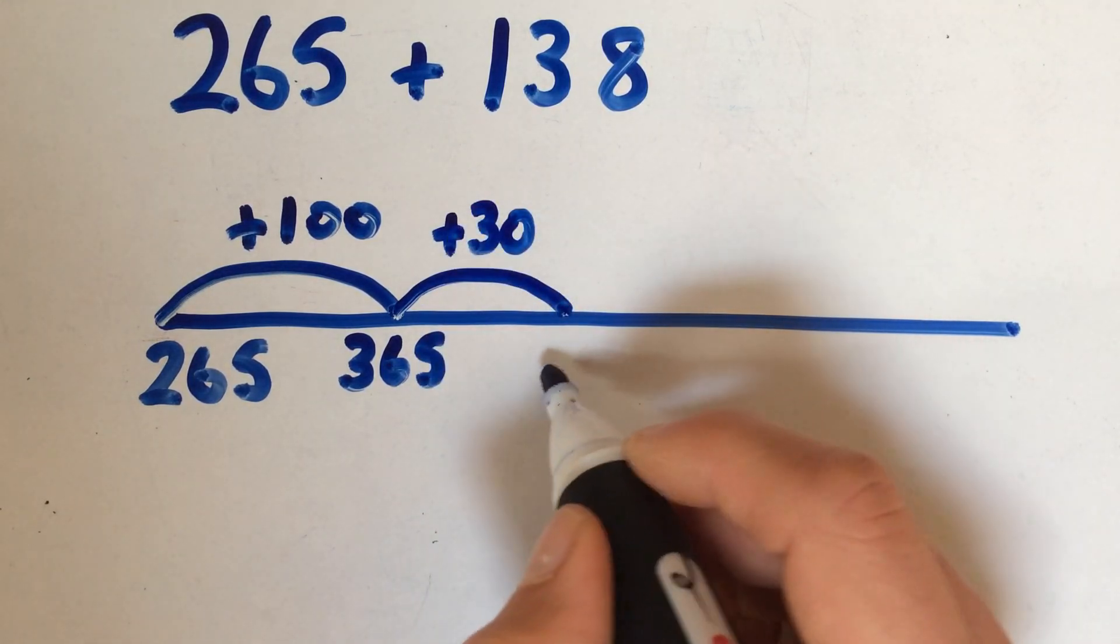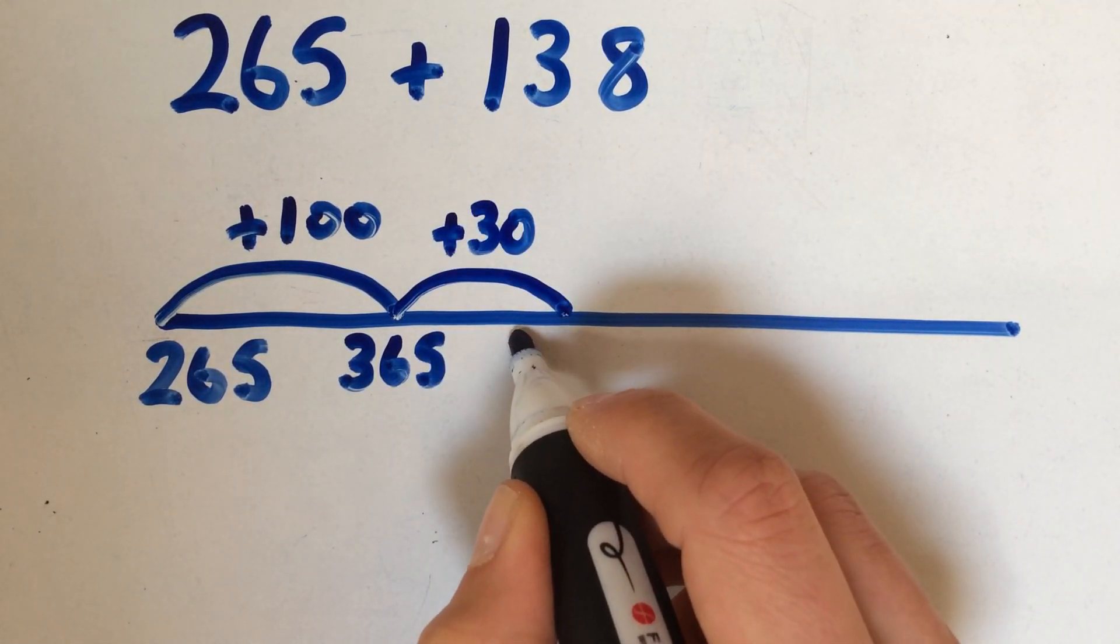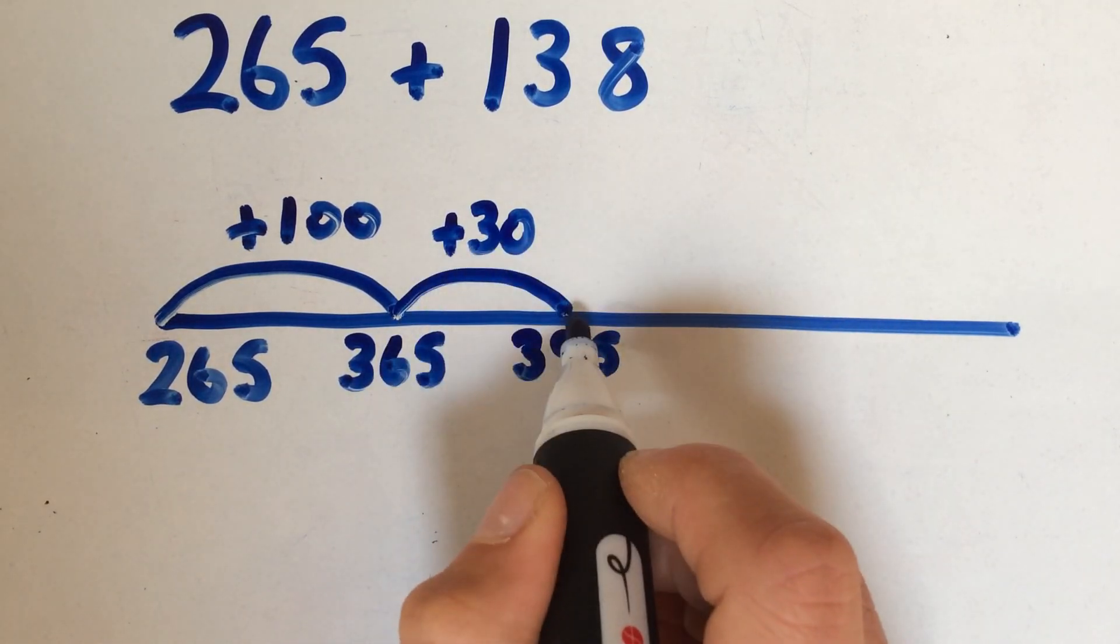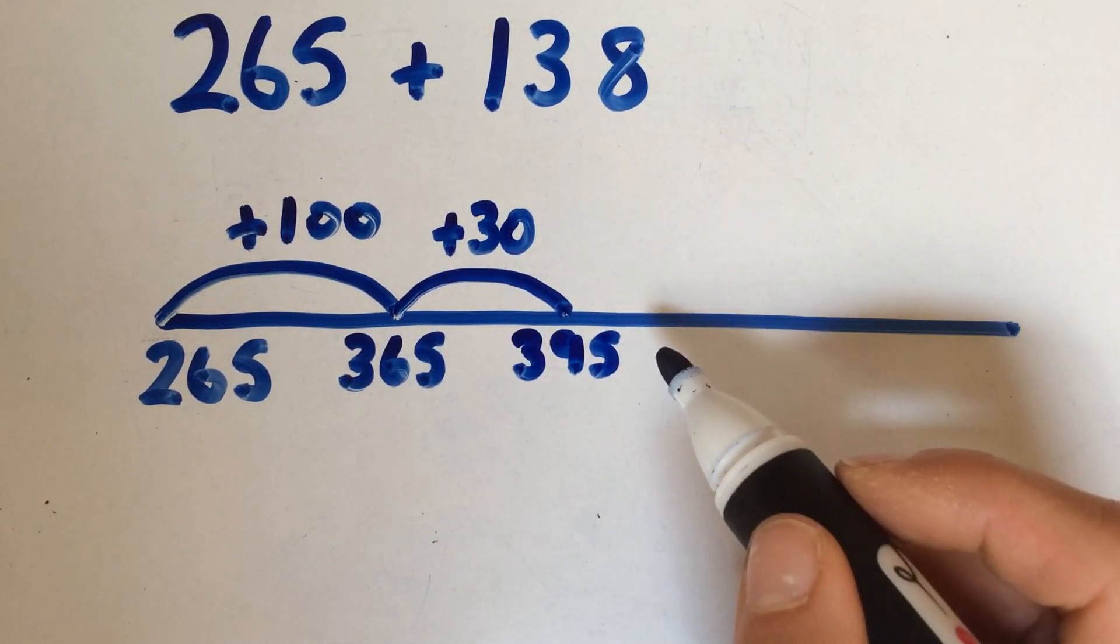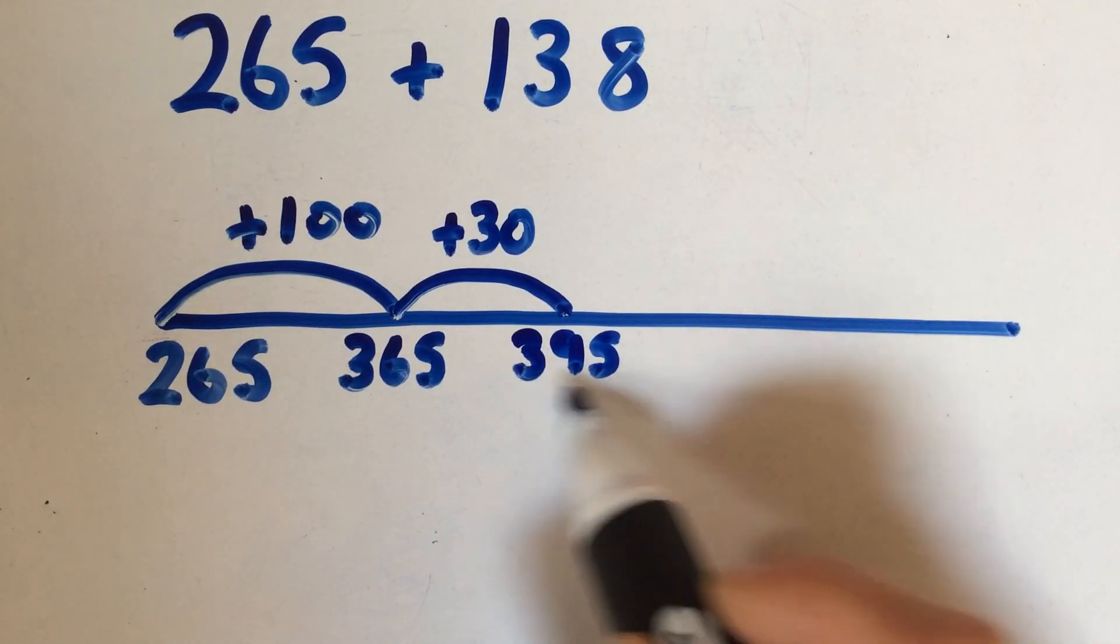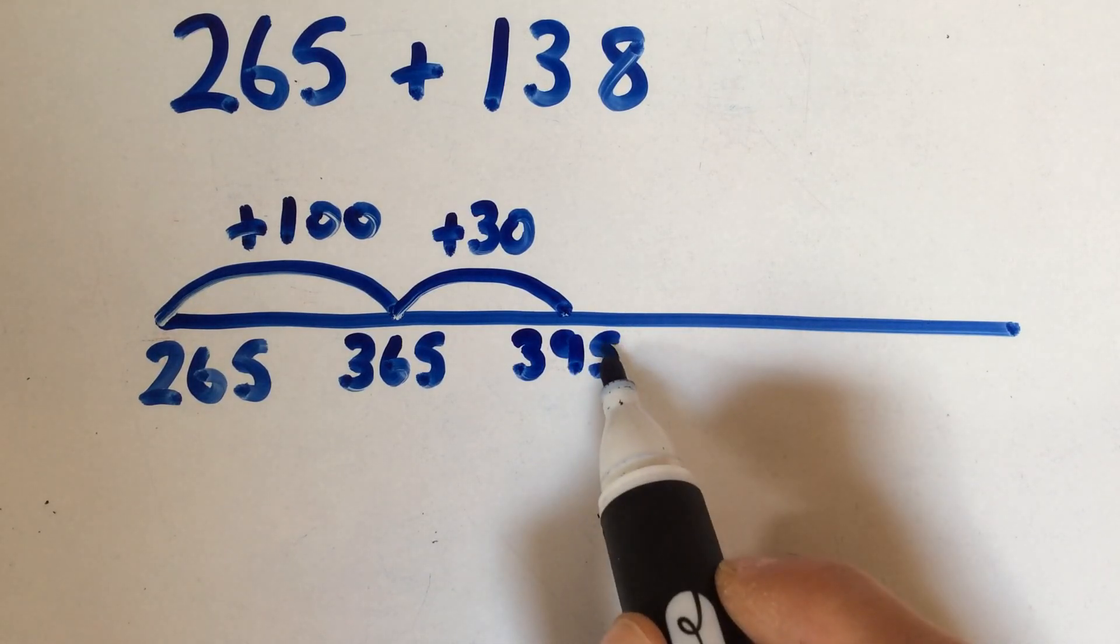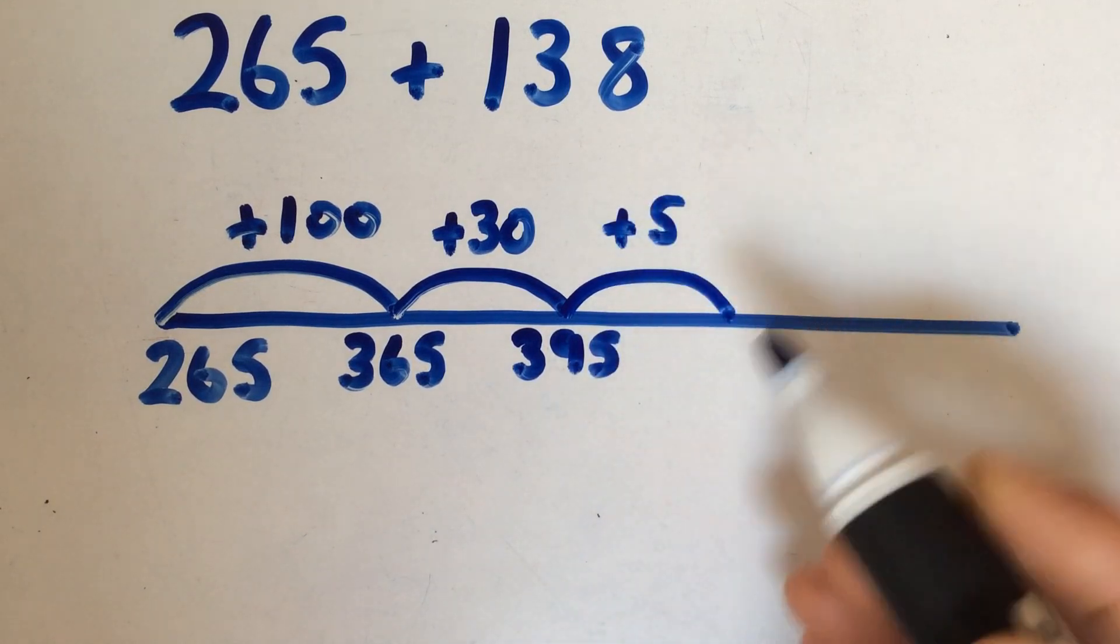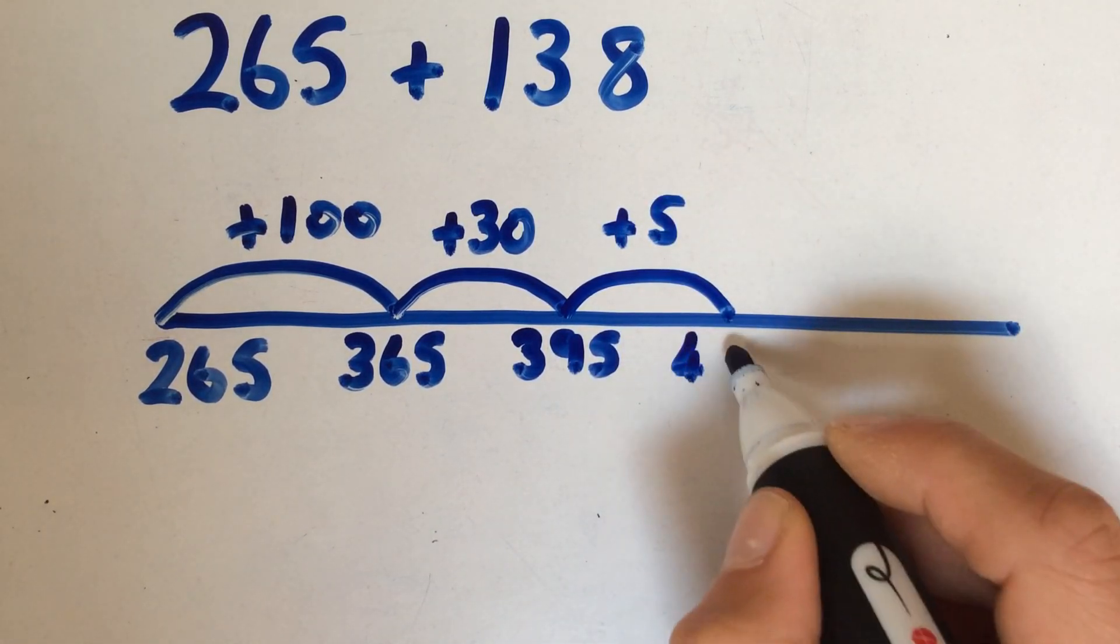So if we went for 395 there, because we've added on 30, we still have an 8 to add on. The child might decide, well we've got 395, if I add on another 5, that might be easier than adding on an 8 all at once, and that would take you up to 400.